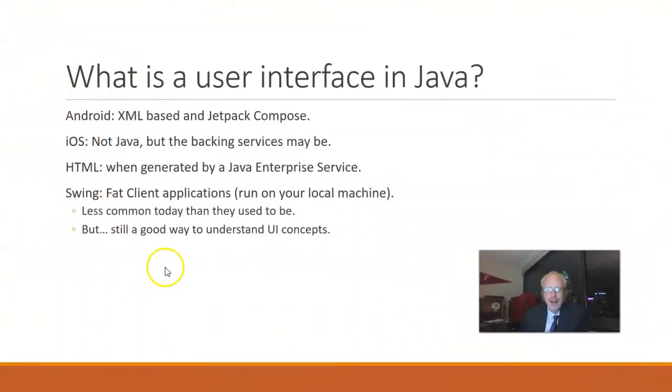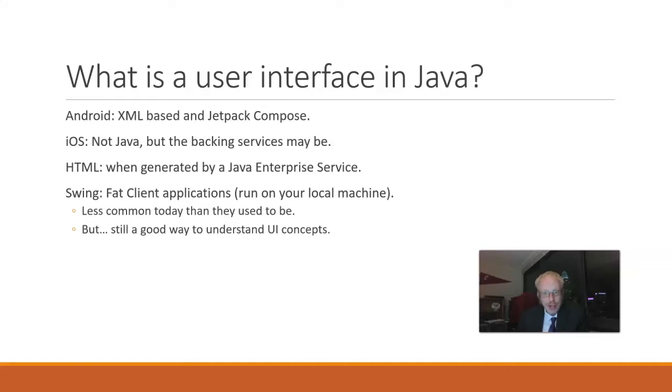So when someone says Java user interface to me today, my first thought is Android. iOS uses Swift and Objective-C, which isn't exactly Java, but it could be hitting Java services on the back end — so that could be a user interface plugged into a Java back end. Then we have HTML, which can be generated by Java in an enterprise application. Something like Spring Boot can generate HTML, and we could even consider other frameworks plugged in with that HTML front end.